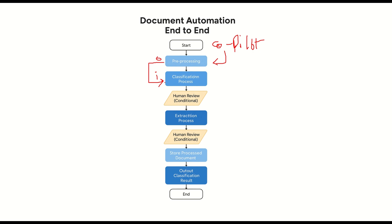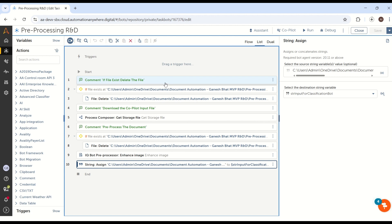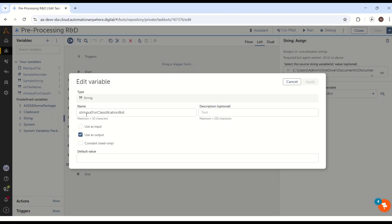So now we have to implement the classification process inside the process flow. We have already built a classification process task in a previous session. If you have not watched those videos, please go and watch to understand what is exactly classification and what is exactly pre-processing. If you are new to my channel, please subscribe and hit the bell icon to get notifications. So now let's jump into Automation Anywhere. This input-for-classification-bot variable, if I go and show in the variable panel, I have made it as an output — intentionally — because this output will be the input for my classification bot.